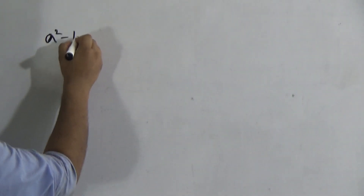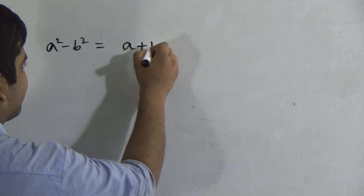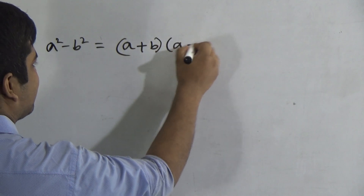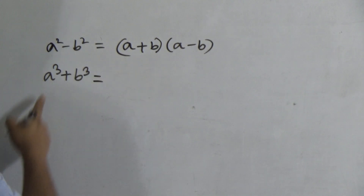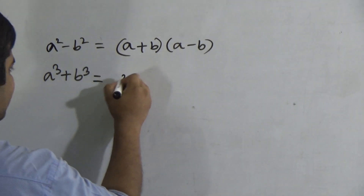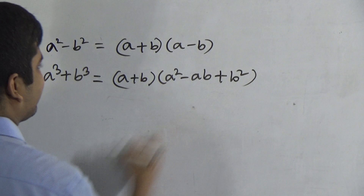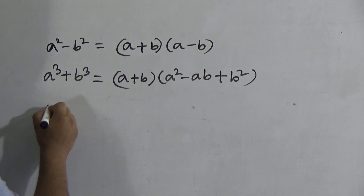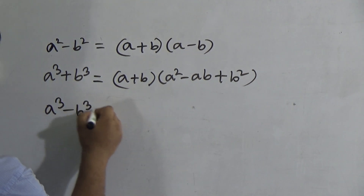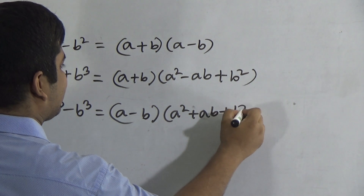What is the formula of a² − b²? The formula of a² − b² is (a + b)(a − b). And notice: a³ + b³. The formula of a³ + b³ is (a + b)(a² − ab + b²). These three formulas are very, very important for this chapter. And a³ − b³ = (a − b)(a² + ab + b²).